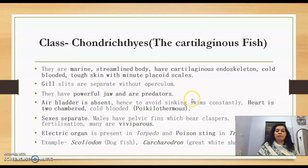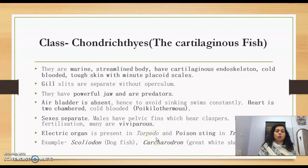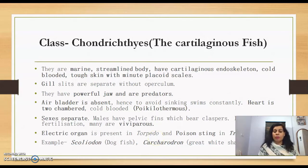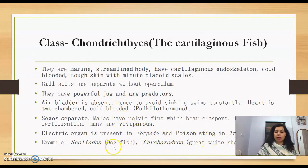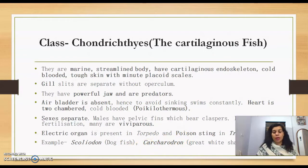Sexes are separate; males have pelvic fins which bear claspers. Fertilization is internal. Many are viviparous, though some are oviparous and lay eggs. An electric organ is present in Torpedo and a poison sting is present in Trygon. Examples include Scoliodon (dogfish), Carcharodon (great white shark), and Pristis (sawfish).